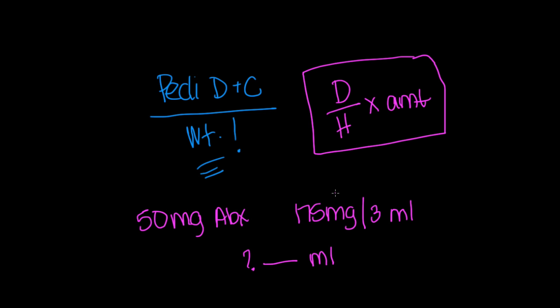I'm most comfortable with using and teaching regular dose over have times amount. So here's our dose or desired amount. Here's what we have. And we need to try to figure out how much we give. There's our amount. So in a regular adult world where we don't have to take into consideration the weight, we would just do the desired 50 milligrams divided by what we have times the amount. So then the formula turns into, I'll put it here, 50 divided by 175 times 3.